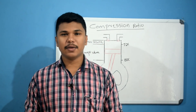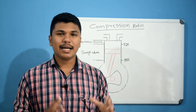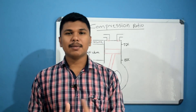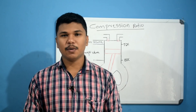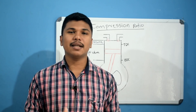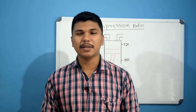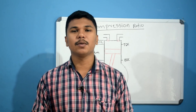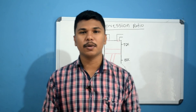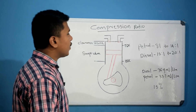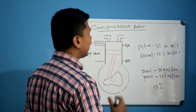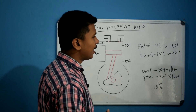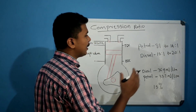The engine's thermal efficiency and fuel efficiency are related to the compression ratio. When fuel is burned, energy is released. Higher compression ratio means better fuel efficiency. The petrol engine has a compression ratio of approximately 8.5 to 14.